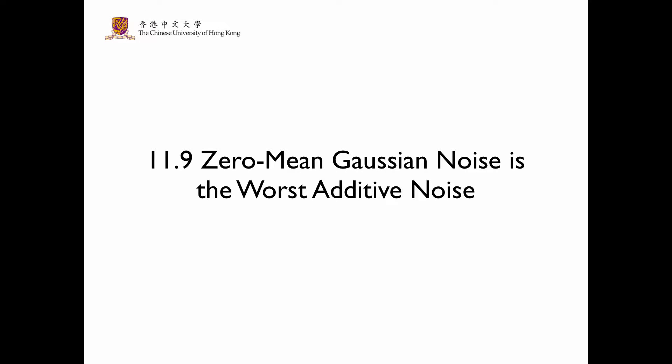Earlier in the chapter, we mentioned that we are interested in Gaussian noise, not only because they are analytically tractable, but also because zero mean Gaussian noise is the worst additive noise. In this session, we discuss why the zero mean Gaussian noise is the worst additive noise.